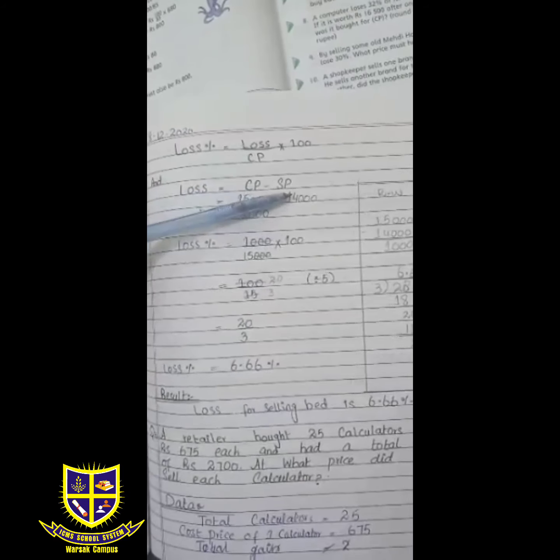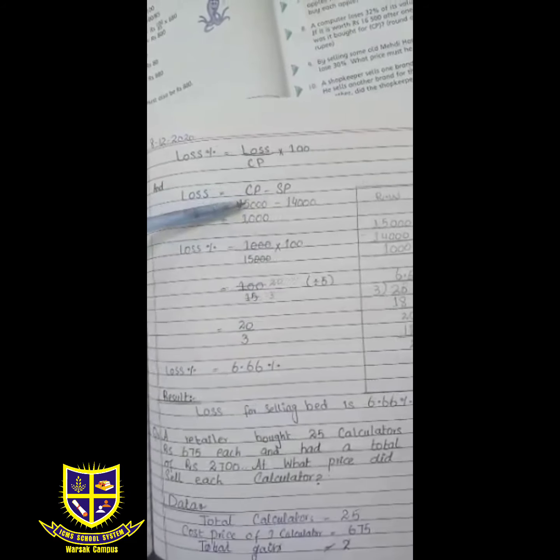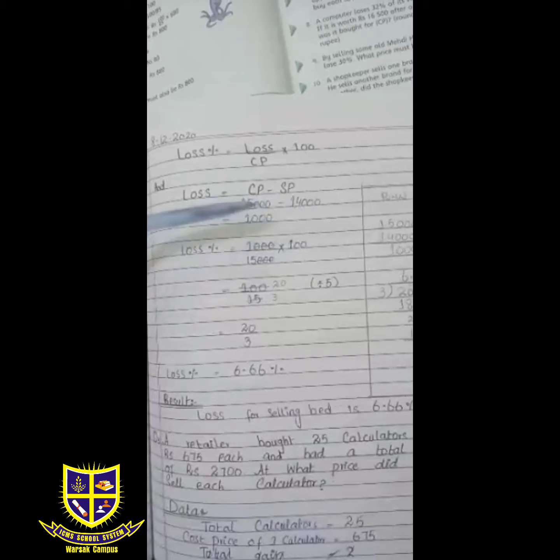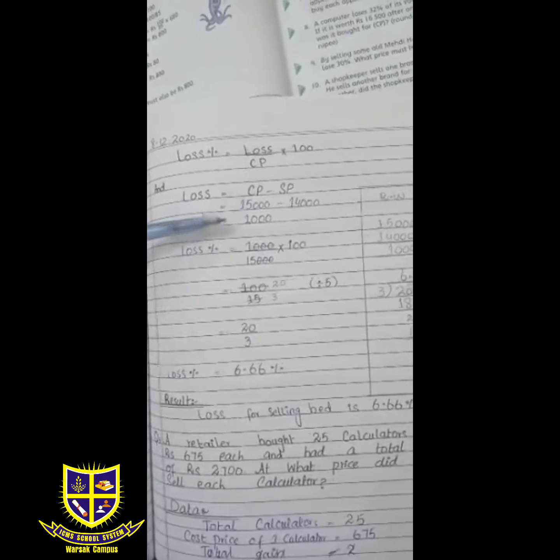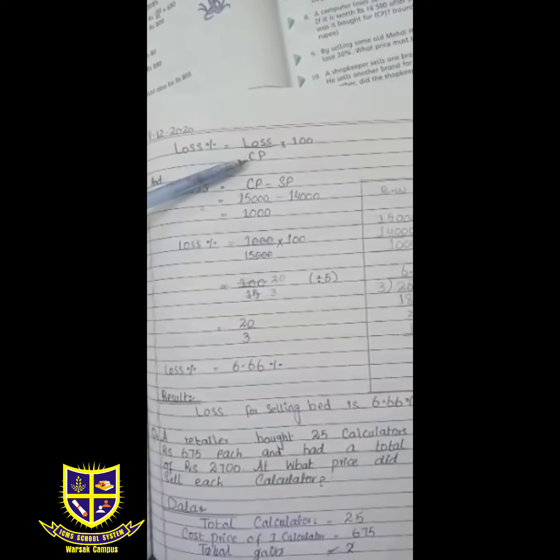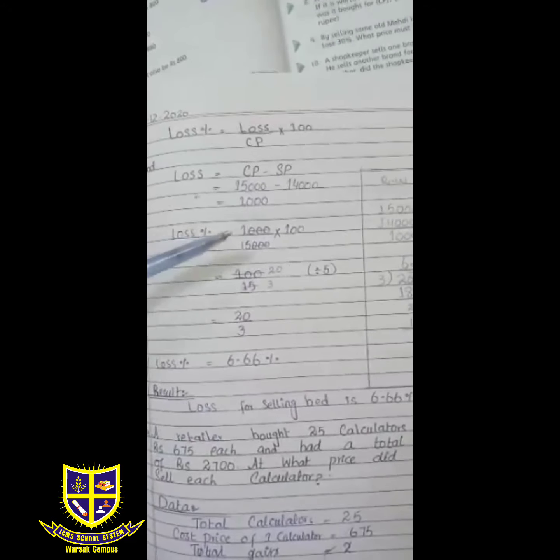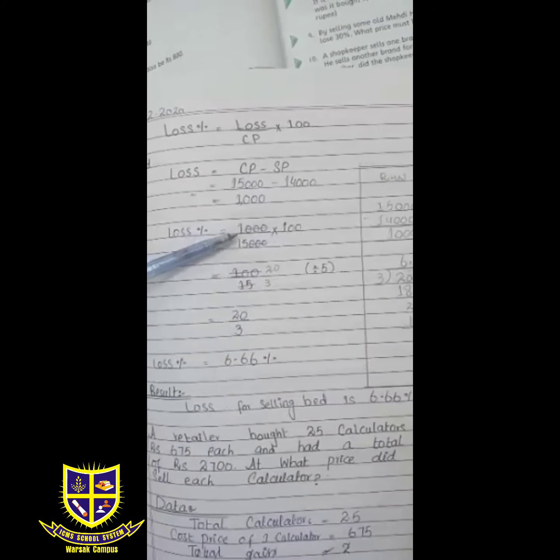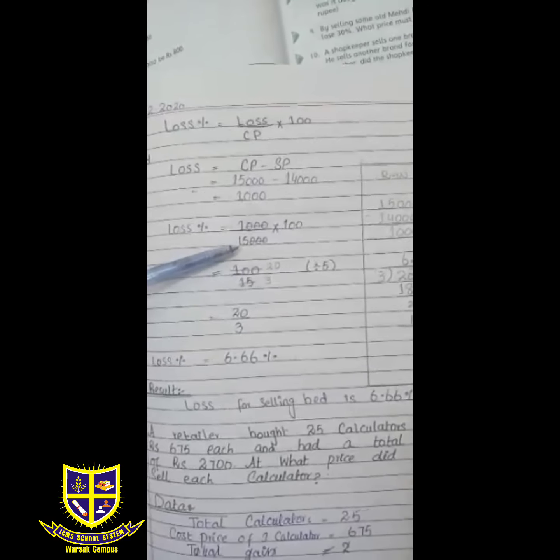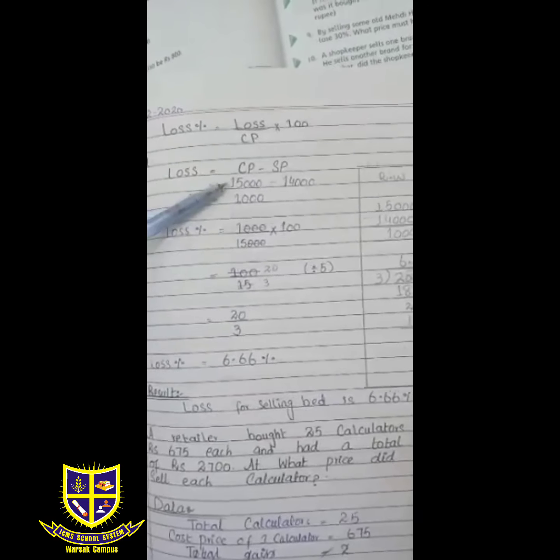CP is cost price, SP is selling price. CP is 15,000, SP is 14,000, which is equal to 1,000. Now we will find loss percentage.